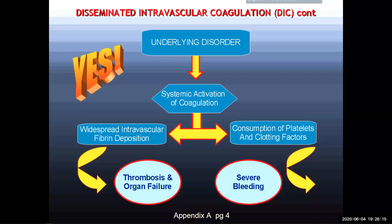When your body gets a big trauma or crush injury, all those damaged cells send a request to the clotting system. The body responds systemically — it opens the floodgates and sends clotting factors everywhere indiscriminately. Because it's a systemic activation, the clotting factors go to injured tissue but also end up in places they shouldn't be, like healthy kidneys, where they form unnecessary clots.